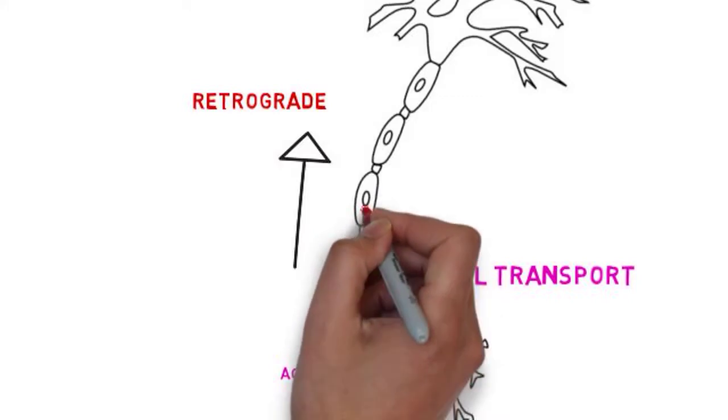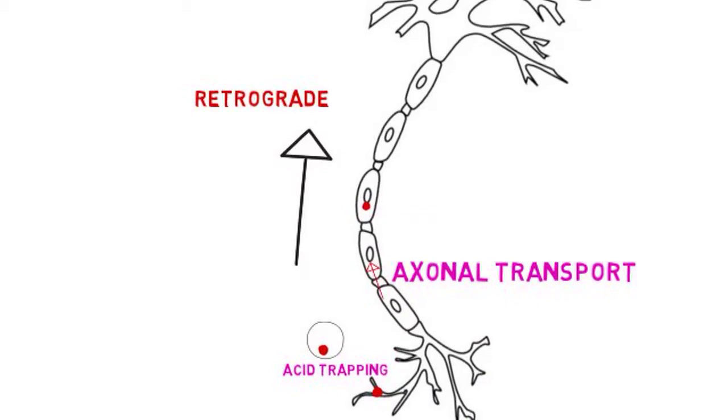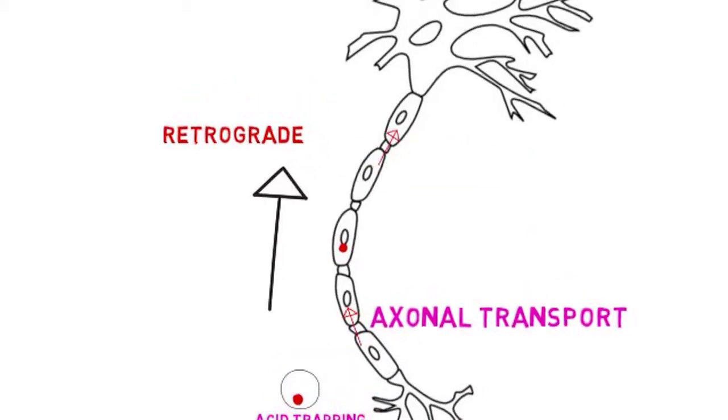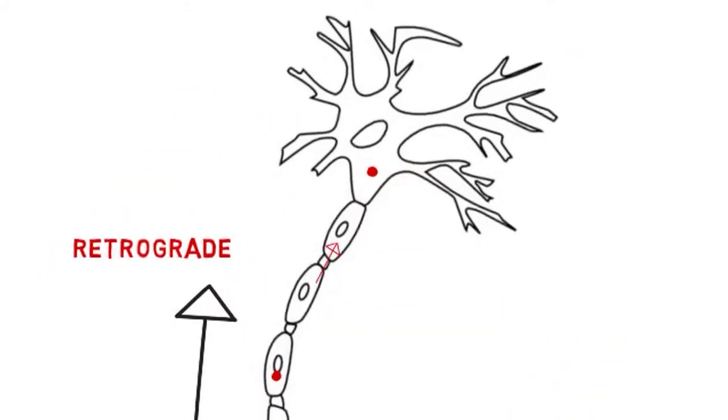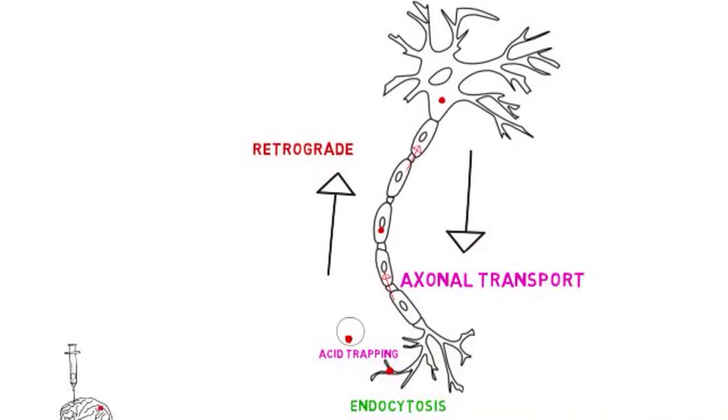The lysosomes containing the tracer then travel in a retrograde direction by means of axonal transport from axonal terminal to cell body. Anterograde tracers are taken in at the cell body and travel to the axon terminals where they are deposited.